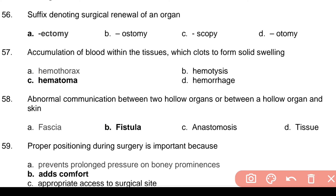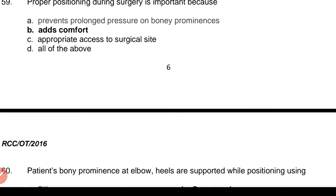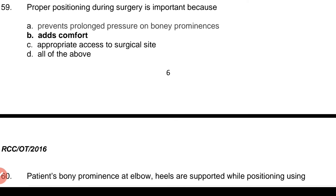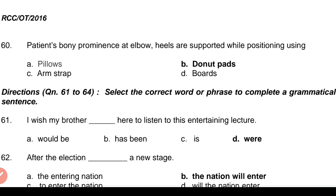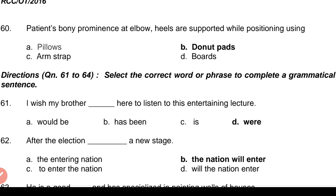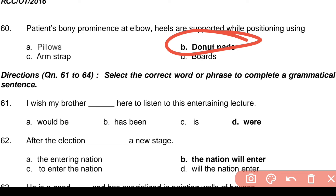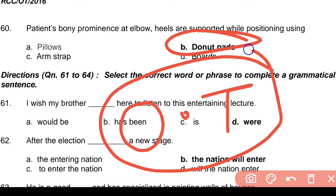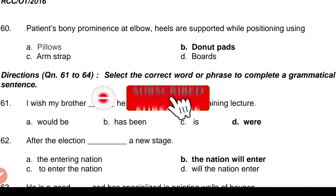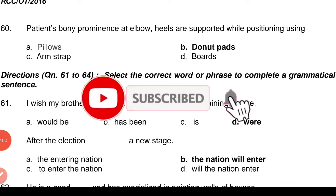Question 58: Abnormal communication between two hollow organs or between a hollow organ and the surface — Answer: b. Fistula. Question 59: Proper positioning during surgery is important because — Answer: b. It adds comfort. Question 60: Patient's bony prominences at elbow and heels are supported while positioning using — Answer: b. Donut pads. All 60 questions are completed; in the next series, more questions will be solved in the video.